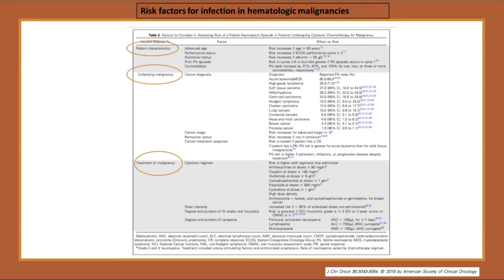This graph from the Journal of Clinical Oncology covers ASCO and IDSA guideline recommendations on factors to consider when assessing risk for febrile neutropenia — patient characteristics, underlying malignancy, and treatment regimen. The table goes over regimens associated with high risk for infectious complications. Under underlying malignancy, diagnoses with the highest infectious complication risk include acute leukemia and MDS — that is where our patient falls.